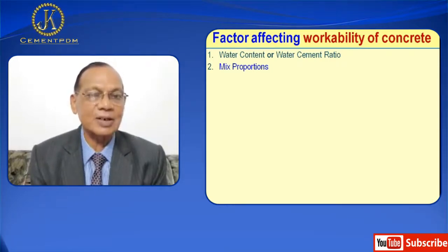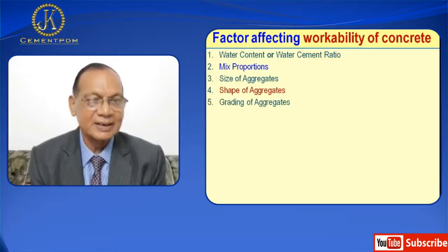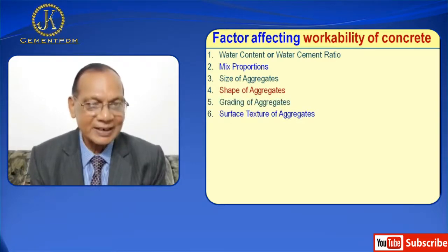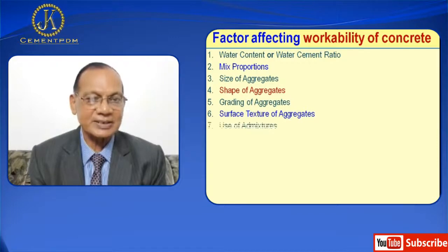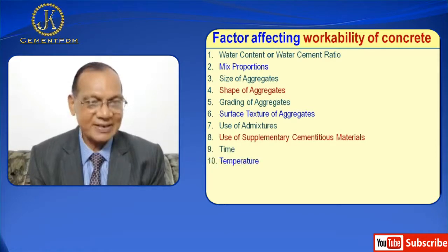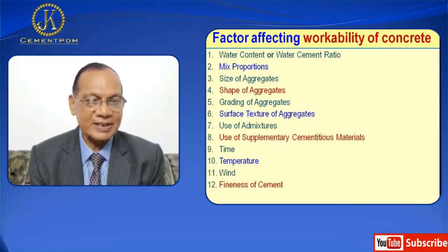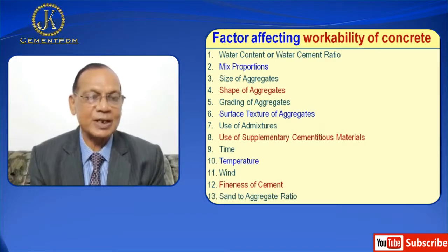Number 1 is water content or water-cement ratio. Number 2, mix proportion. Number 3, size of aggregate. Number 4, shape of aggregate. Number 5, grading of aggregate. Number 6, surface texture of aggregate. Number 7, use of admixture. Number 8, use of supplementary cementitious material. Number 9, time. Number 10, temperature. Number 11, wind. Number 12, fineness of cement. And finally, number 13, sand to aggregate ratio.